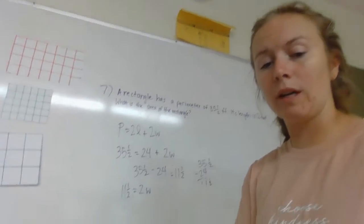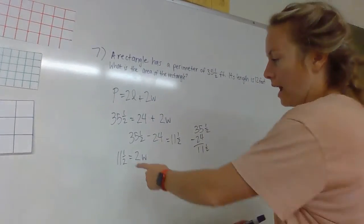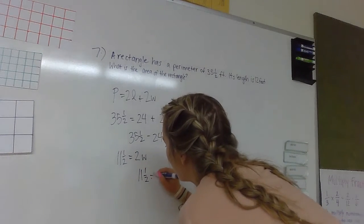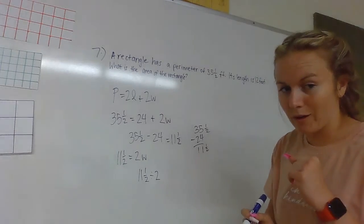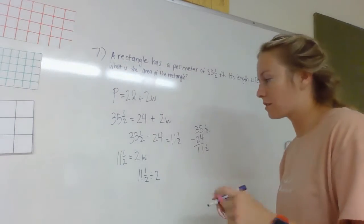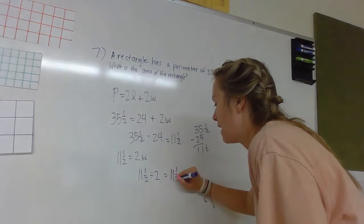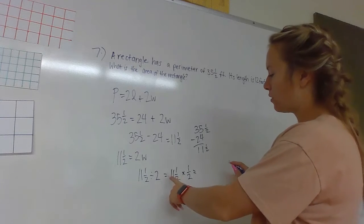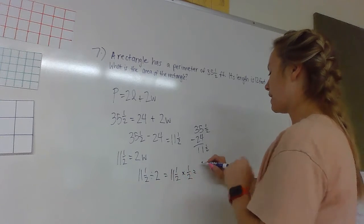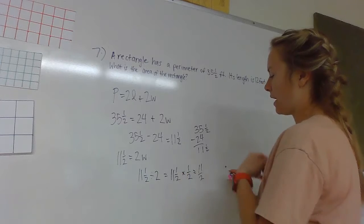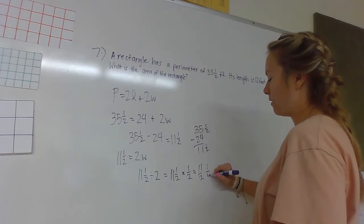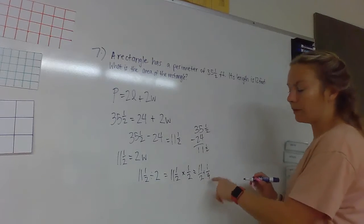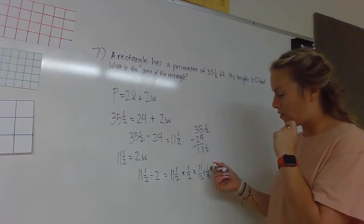So 11 and a half equals 2W, so 2 of the widths. So if it equals 2 of the widths we need to divide 11 and a half by 2. So 11 and a half divided by 2—we know if we're dividing fractions it's really going to be 11 and a half times by 1/2, and that gives us 11 times a half is 11 halves and a half times a half is 1/4. So we have to add these two together. We can't do that because they don't have the same denominators.